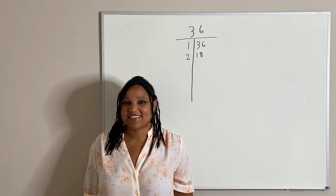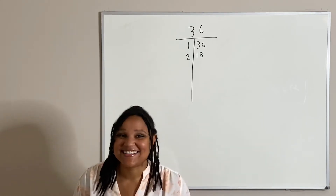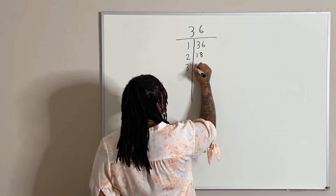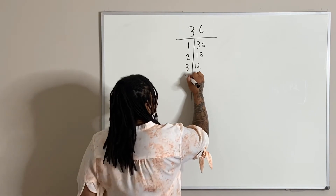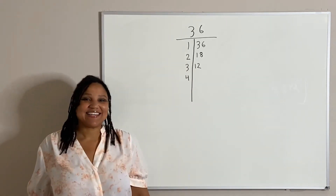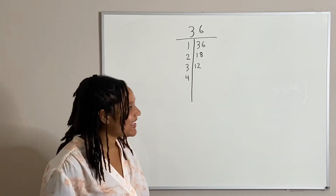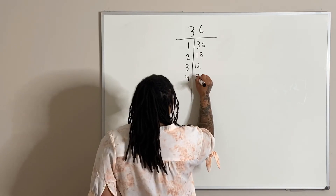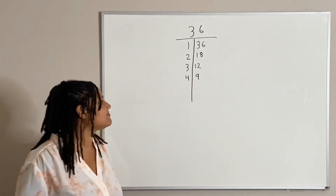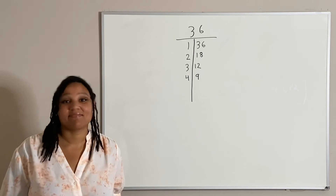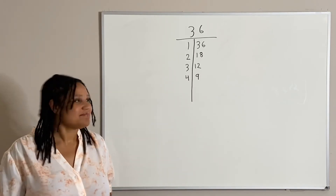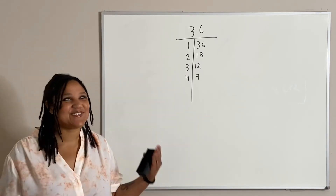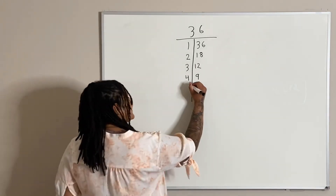How about the number three? Yes, you said it — three and 12 is 36. So how about the number four? Yes, four and nine is 36. How about five? You're right — five does not work. How about six? Great, you guys are so awesome. Six and six works.